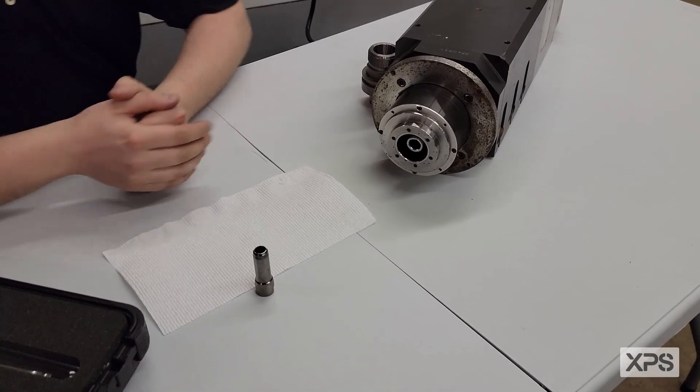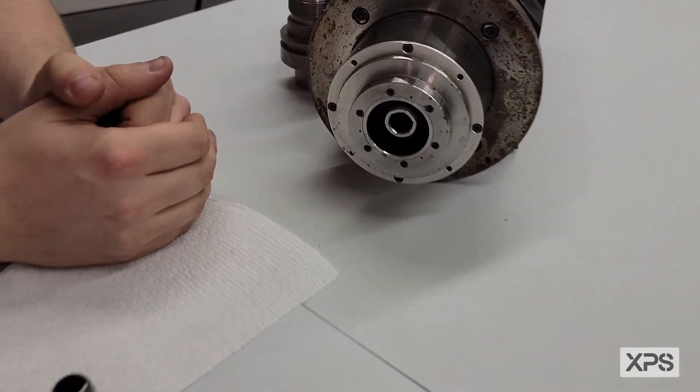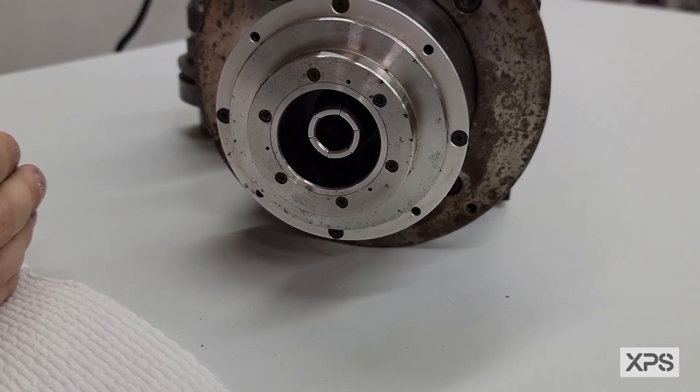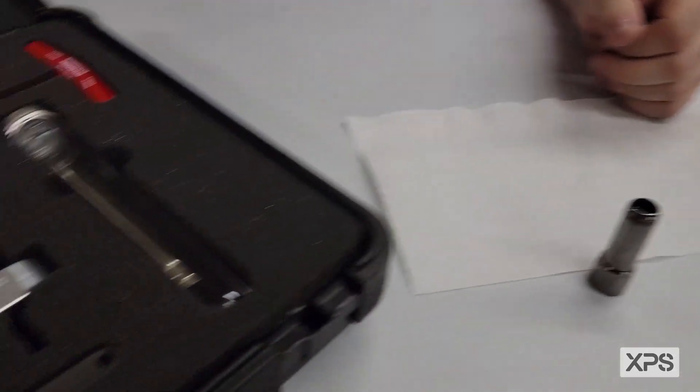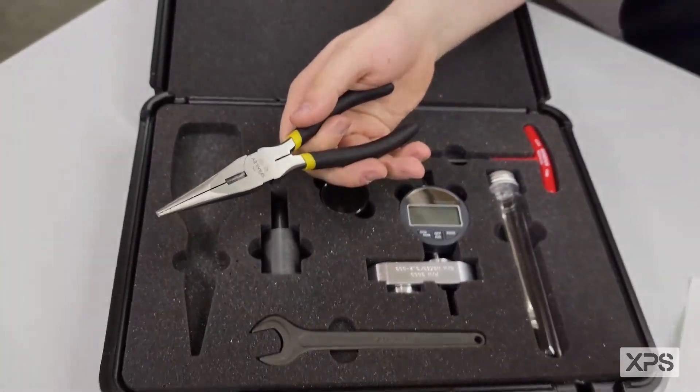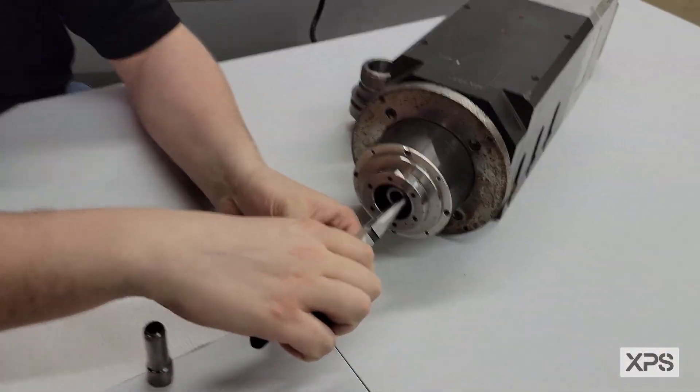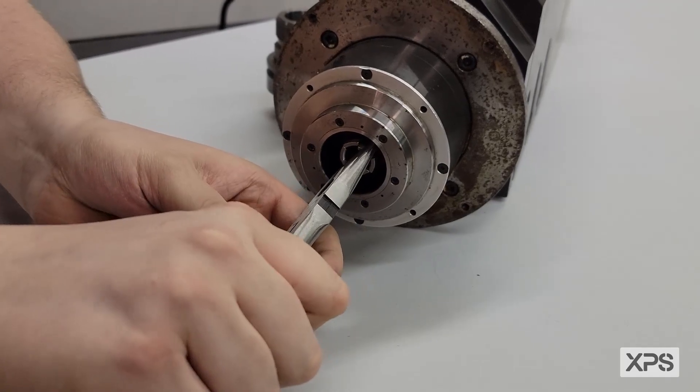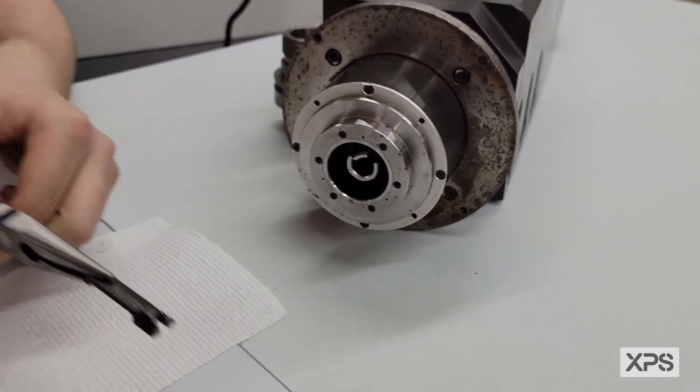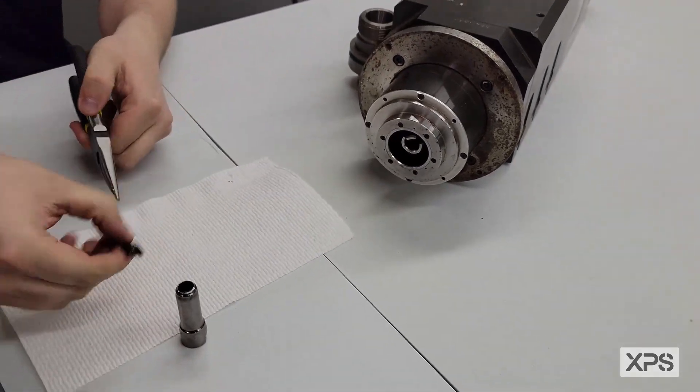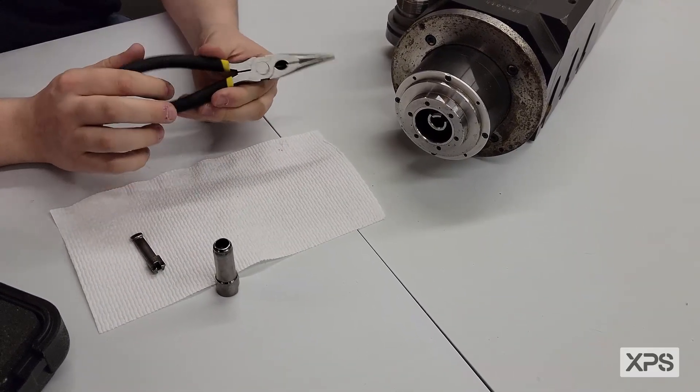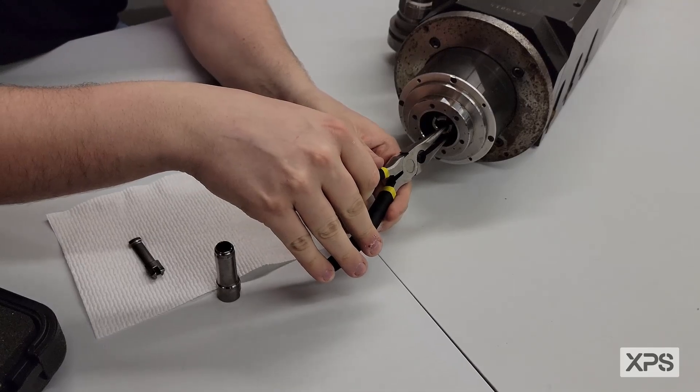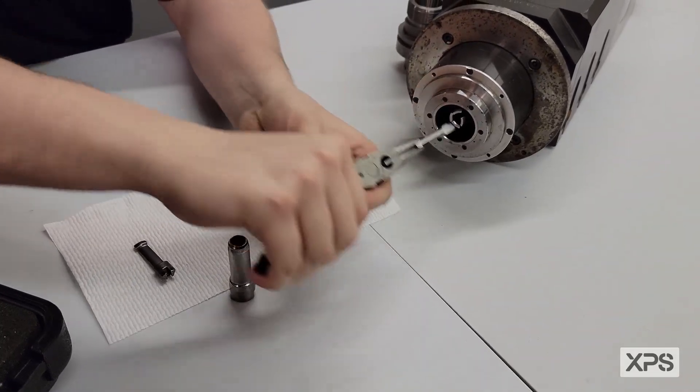Once your spool is removed, you'll see at the bottom of your spindle the fingers that are exposed. The next step is we're going to need to remove the fingers. In your kit, there is a needle nose pliers that's included. Firmly grip onto one of the fingers and wiggle it and pull them out. We do recommend going every other finger. They just come out much easier.